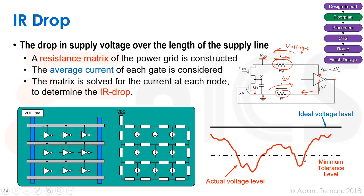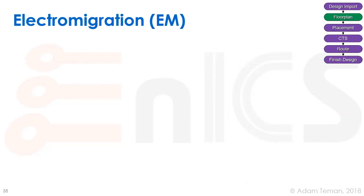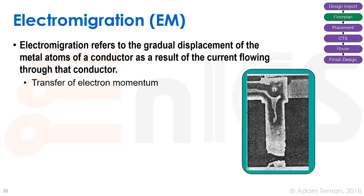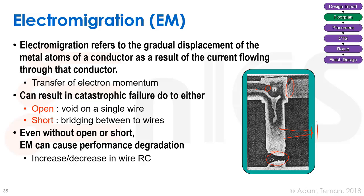Electromigration is the other long-term reliability issue. It refers to the gradual displacement of metal atoms in a conductor as a result of current flowing through it — a transfer of electron momentum. Electrons hit the atoms and eventually cause things to break, or create hillocks that cut through the dielectric and short two wires. This results in opens (a void on a single wire) or shorts (bridging between two wires).